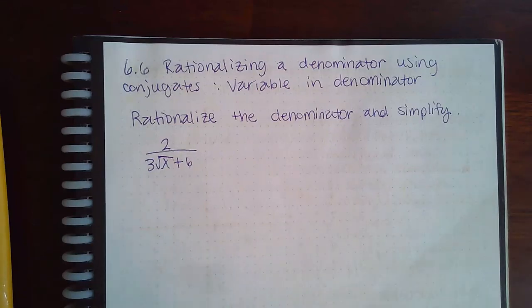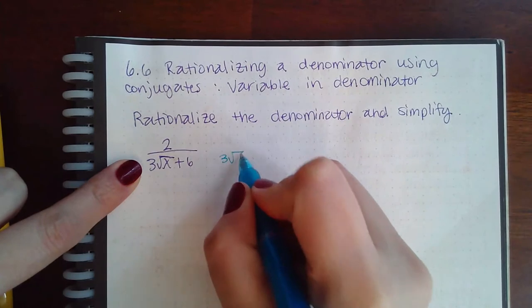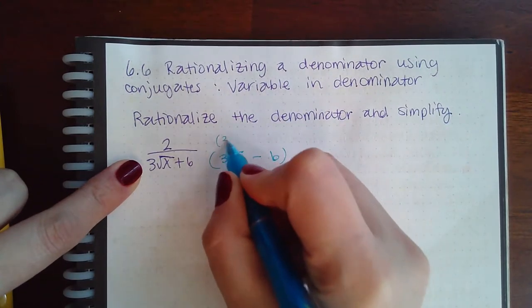Here we have rationalizing a denominator using conjugates - variable in the denominator. We also have a binomial, so we have to use the conjugate, 3√x minus 6. Whatever we do to the bottom we have to do to the top.